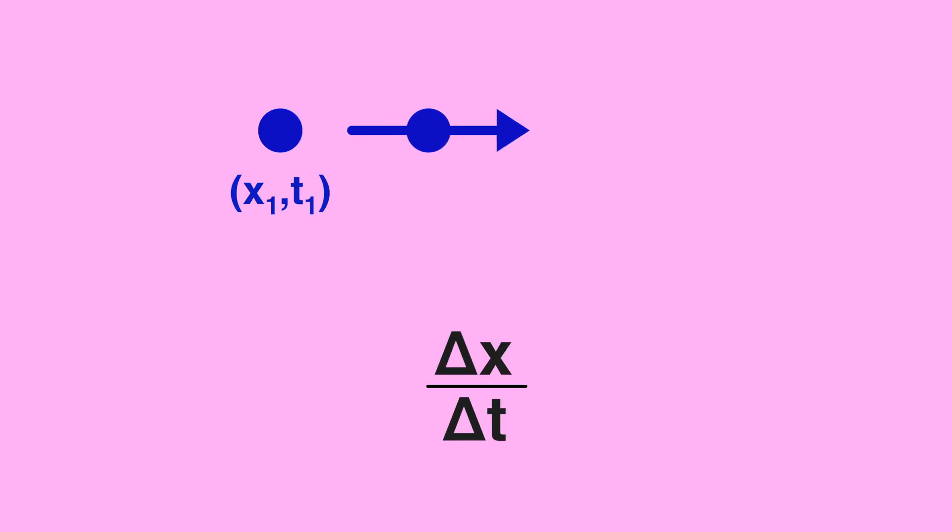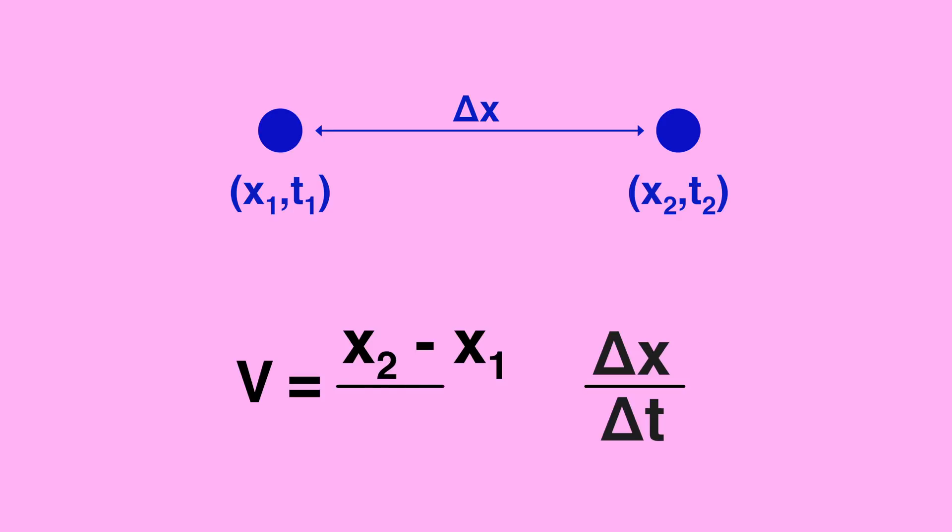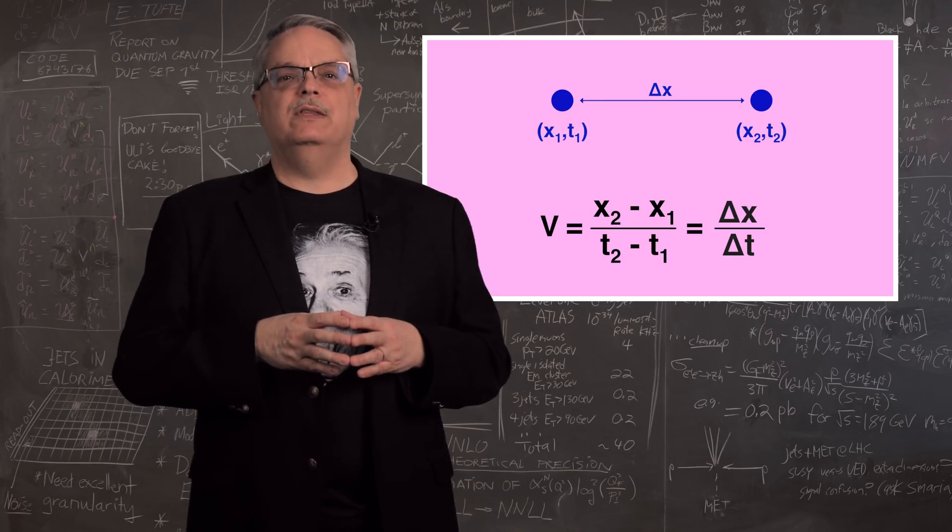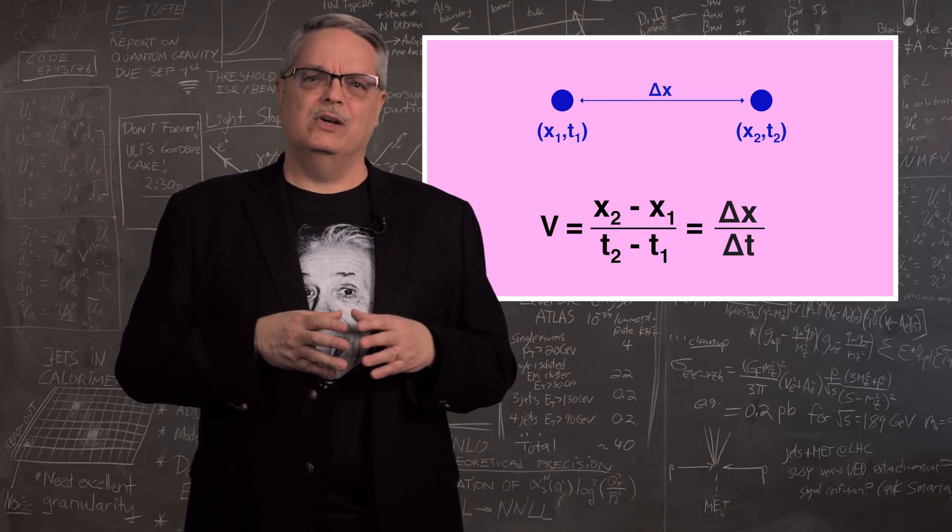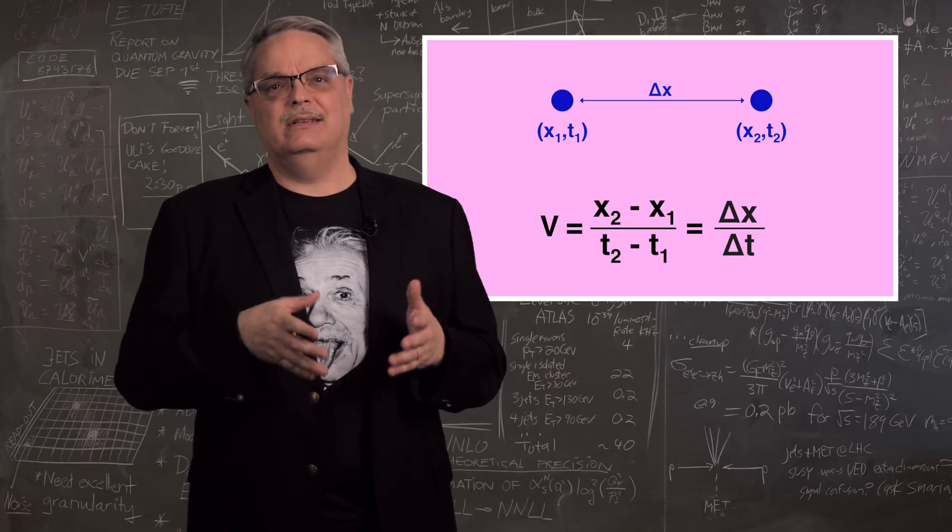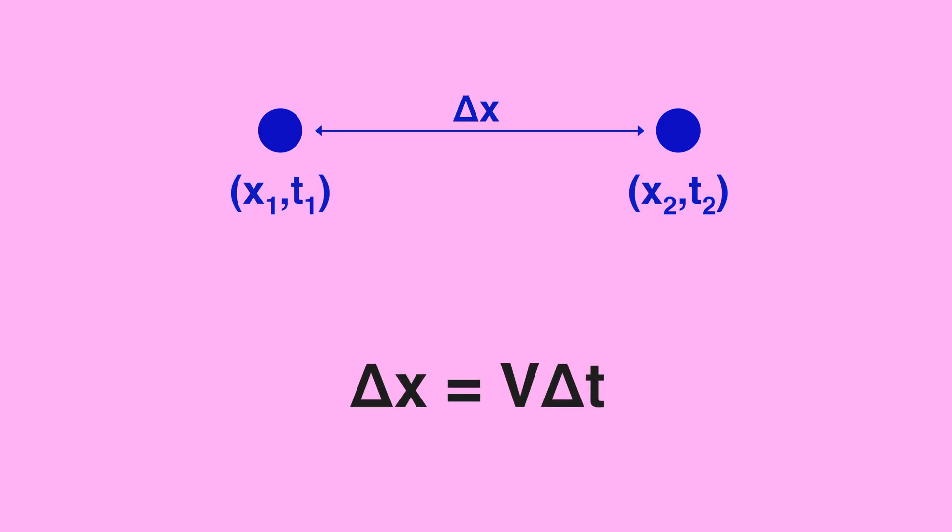That means that you can simply pick two arbitrary times, call them one and two, and write down Don's velocity as big V equals x2 minus x1 divided by t2 minus t1. We can also write this as delta x divided by delta t. I just did that to make the equations a little more compact. If you like, you can keep it in the format using the ones and twos. Also, I'd like to change things around and write this as delta x equals big V times delta t. That'll be handy in a minute.